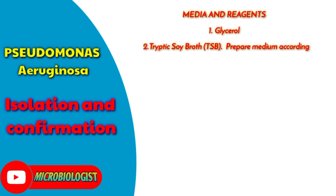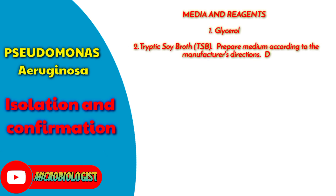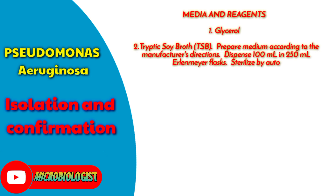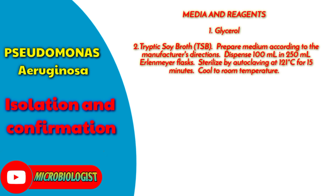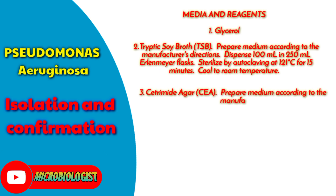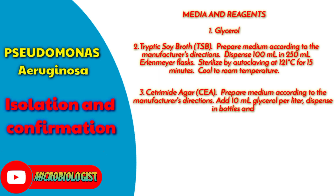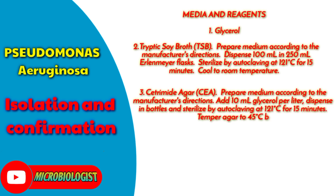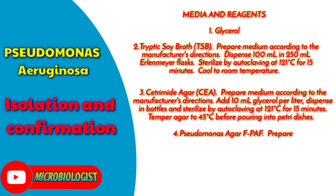Prepare medium according to the manufacturer's directions. Dispense 100 ml in 250 ml Erlenmeyer flasks. Sterilize by autoclaving at 121 degrees Celsius for 15 minutes. Prepare medium according to the manufacturer's directions. Add 10 ml glycerol per liter, dispense in bottles, and sterilize by autoclaving at 121 degrees Celsius for 15 minutes. Temper agar to 45 degrees Celsius before pouring into petri dishes.